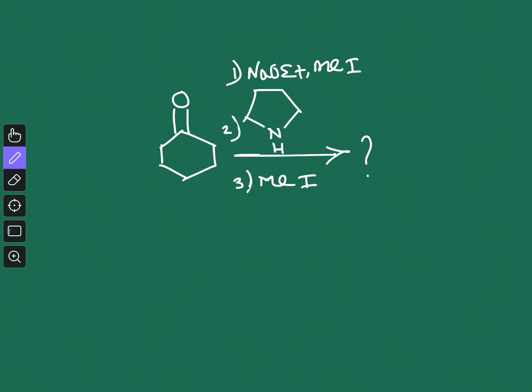Welcome to Chemistry Lover. This is the sixth video of the series 'Hundred Important Topics in Organic Chemistry.' In this video, I am going to talk about the reaction mode of enamine. This is a very popular question that you may have encountered in several competitive exams. The question is based on enamine formation — how the enamine will form and how it will react, basically the regioselectivity of the reaction.